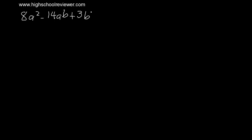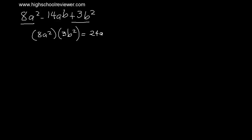Let's have our last example. We have 8a squared minus 14ab plus 3b squared. To factor this general trinomial, we multiply the first term and the last term: 8a squared multiplied by positive 3b squared gives positive 24a squared b squared. We then factor out 24a squared b squared and find the factors that sum to negative 14ab.